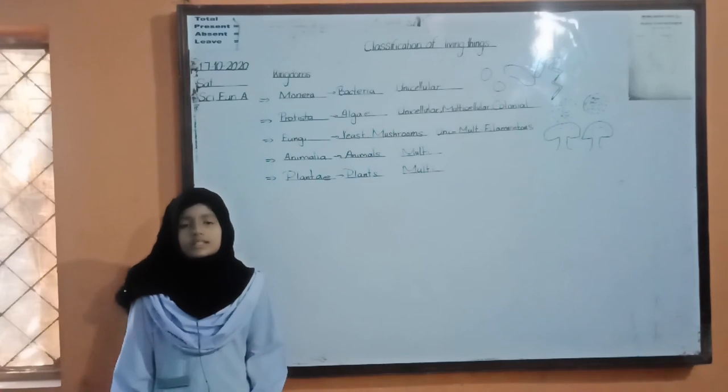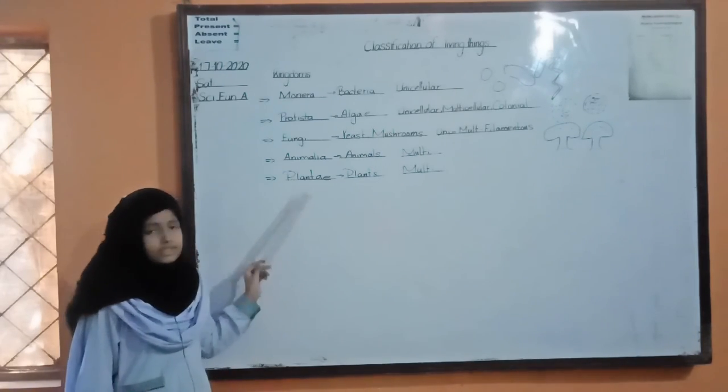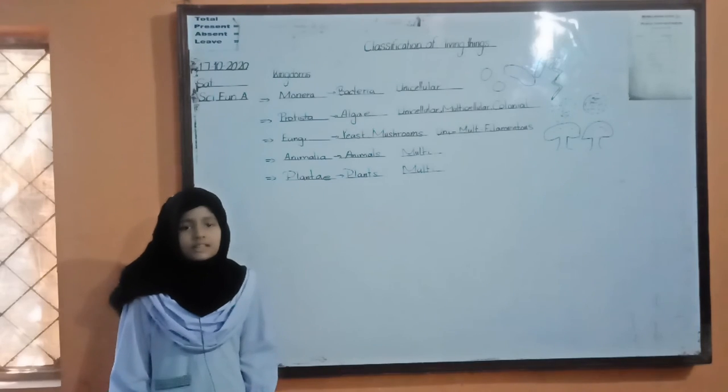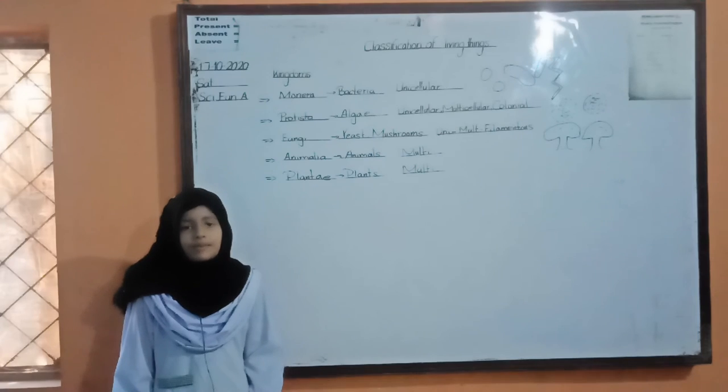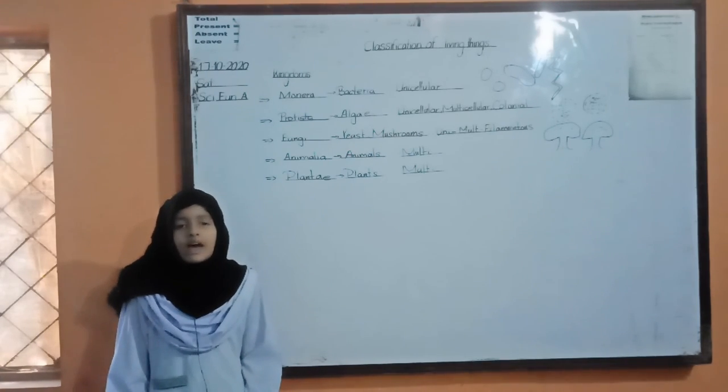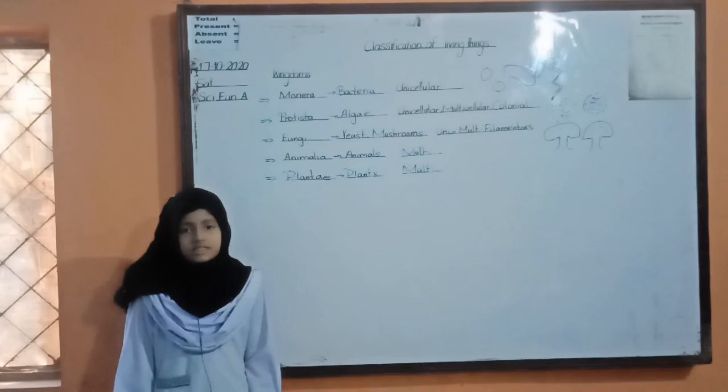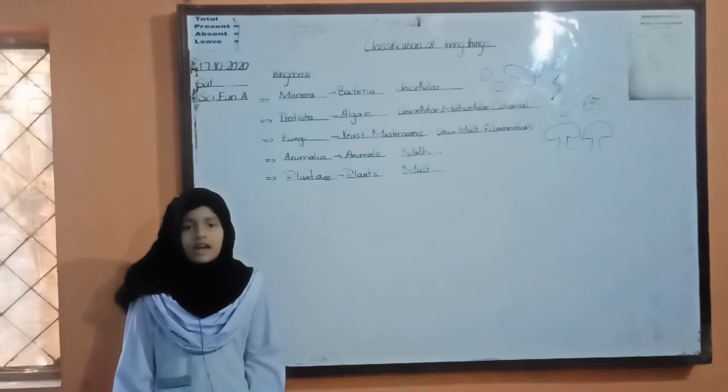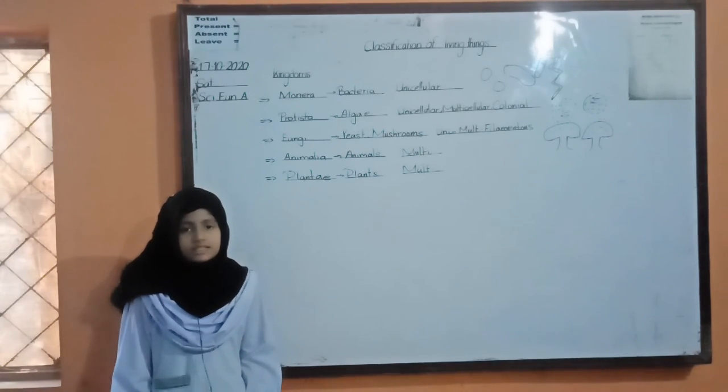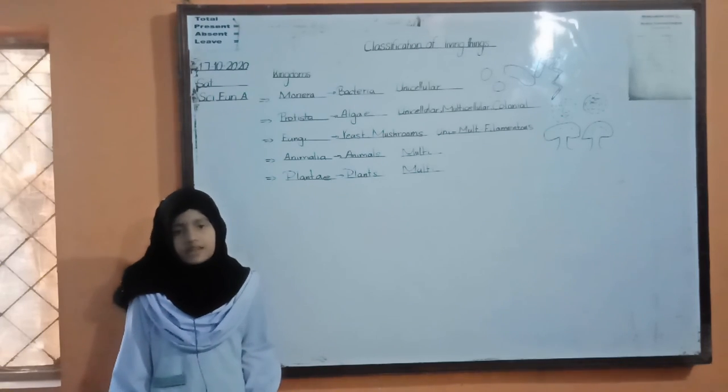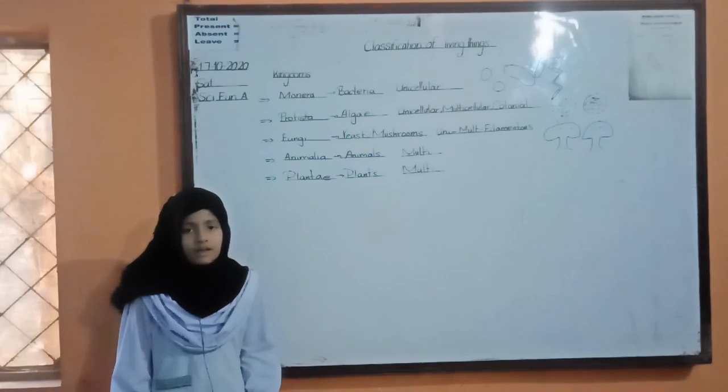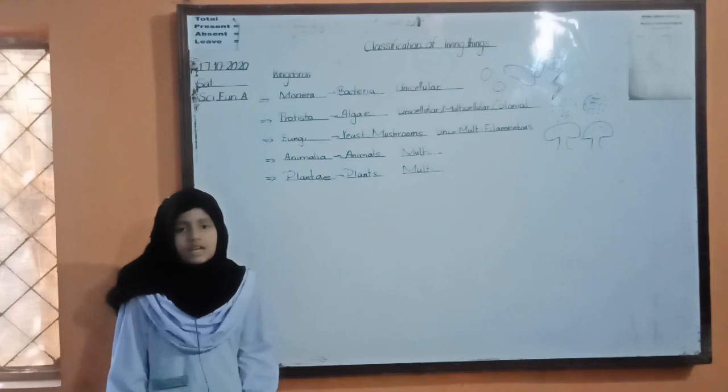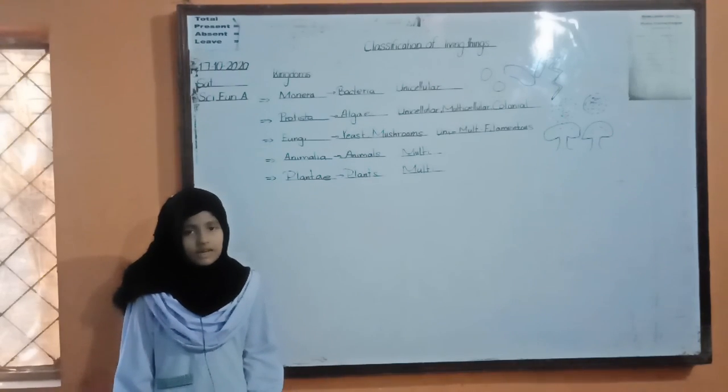Now we are going to discuss our last kingdom. It is Kingdom Plantae. Kingdom Plantae consists of plants. They are multicellular. There are two groups of plants: flowering plants and non-flowering plants. Flowering plants are those plants which have all parts of plants, like roots, stem, leaves, fruit, and flowers. Non-flowering plants lack some parts of plants. Like some non-flowering plants lack stem, some lack fruit and flowers, and some lack leaves.